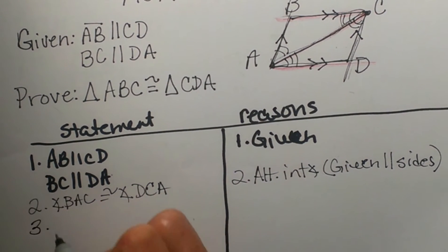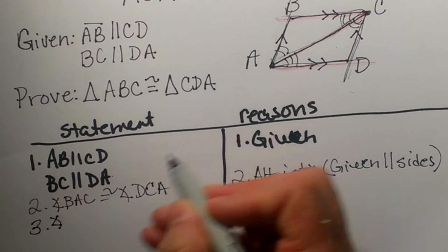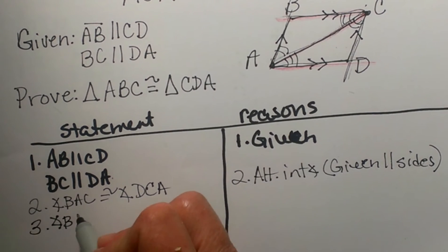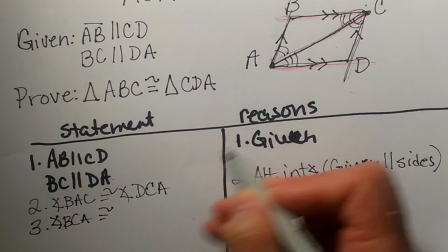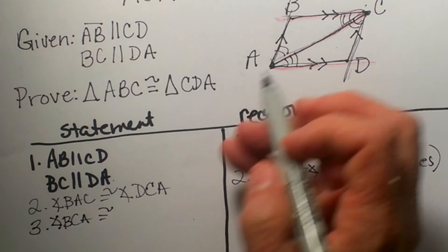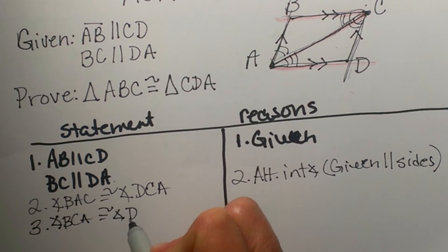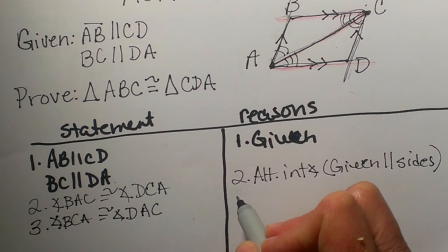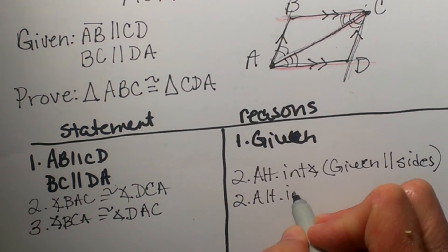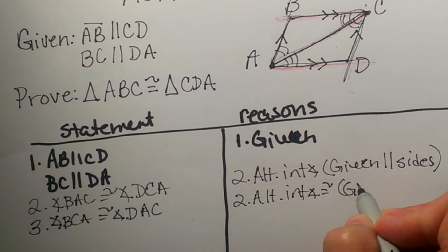So my third step is going to be angle BCA. Angle BCA is going to be congruent to angle DAC. And how do we know that? Well we have alternate interior angles that are congruent given we have parallel sides.